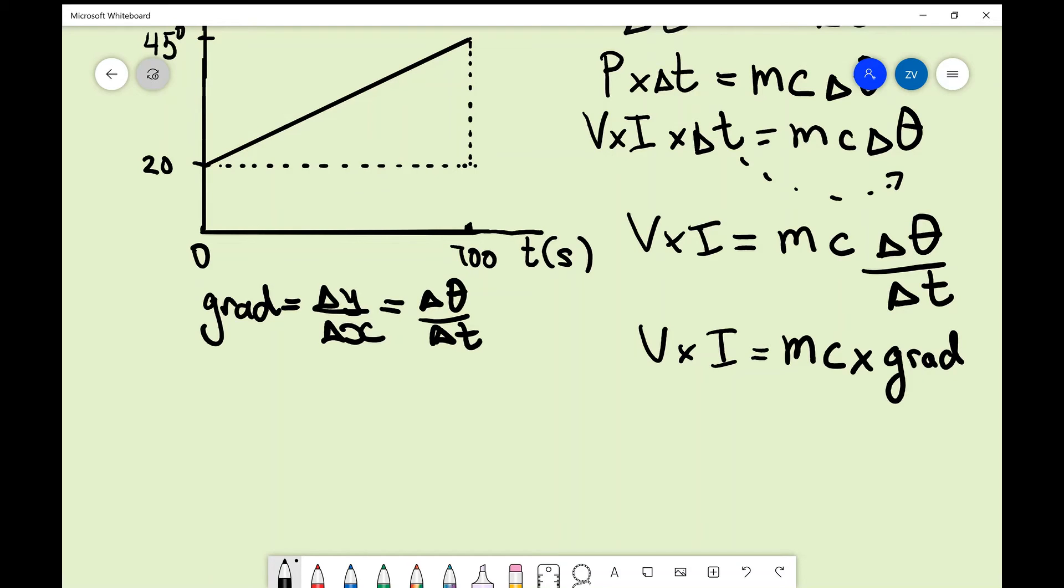We can just rearrange for the specific heat capacity c as our final step. So c will just be equal to V times I divided by the mass times the gradient.